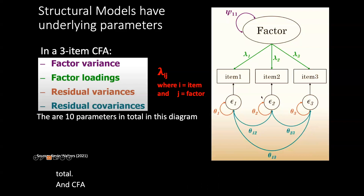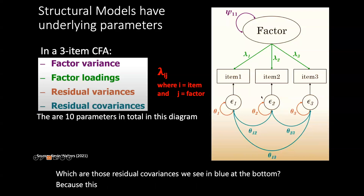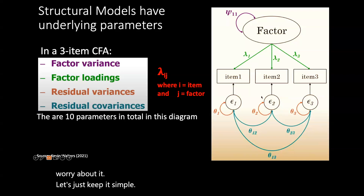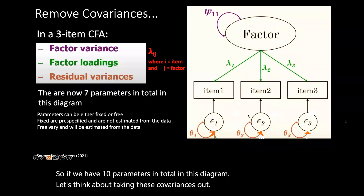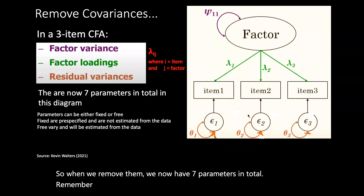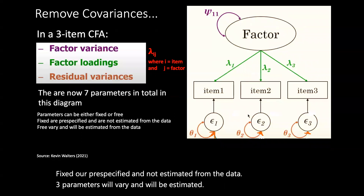In CFA, we typically don't expect to see correlated residuals — those residual covariances shown in blue — because this assumption is already accounted for by the common variance in the model. So if we remove those covariances from the ten total parameters, we now have seven parameters in total. Parameters can be either fixed — pre-specified and not estimated from the data — or free, meaning they will vary and be estimated from the data. There are subtraction formulas to get the number of free and fixed parameters, which we use to find out what kind of model we have: just-identified, over-identified, or under-identified.